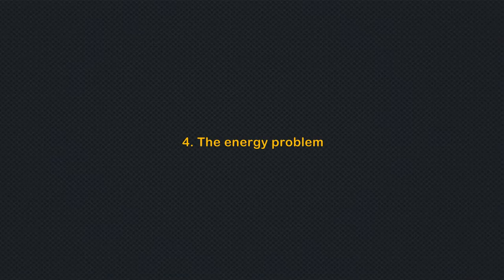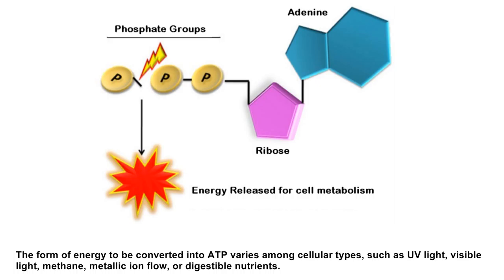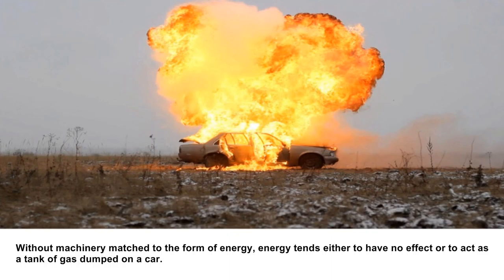The energy problem: prebiotic processes are similar in character to dumping a tank of gasoline on a car and igniting it. By contrast, living cells have machinery which converts energy appearing in a specified form into ATP — the energy currency of the cell — which is useful for biotic processes. The form of energy to be converted into ATP varies among cellular types, such as UV light, visible light, methane, metallic ion flow, or digestible nutrients. Without machinery matched to the form of energy, energy tends either to have no effect or to act as a tank of gas dumped on a car.